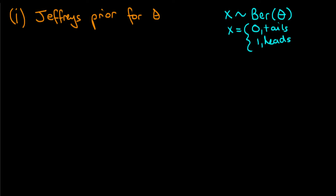We're going to derive the Jeffreys prior for theta, where theta represents the probability of our coin landing heads up. We use a random variable x to describe the outcome of this coin flip, where x is zero if the coin lands tails up and one if it lands heads up.